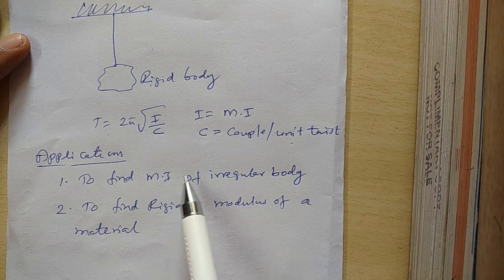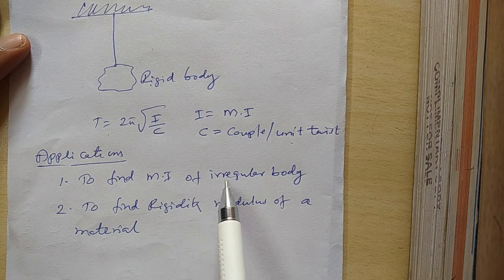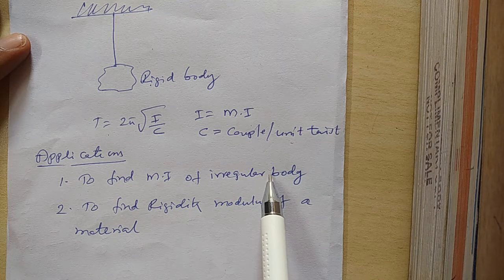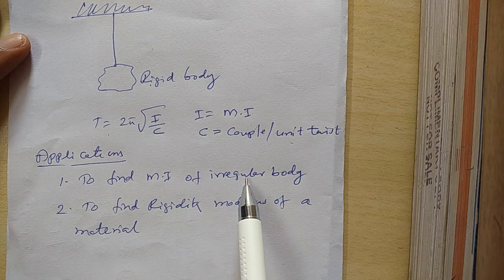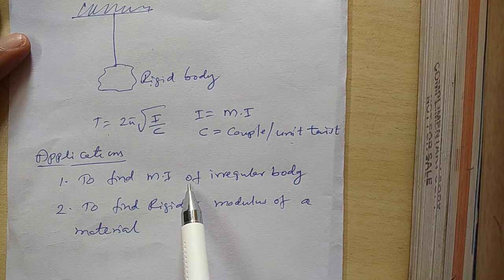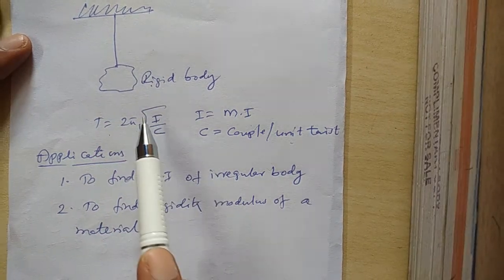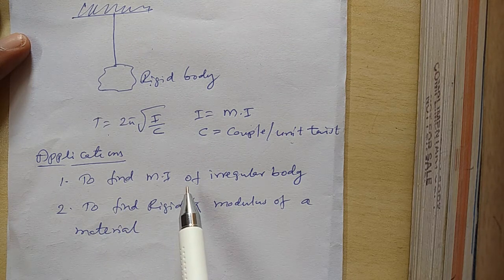The applications of the torsional pendulum experiment are: first, we can find the moment of inertia of an irregular body. By using regular bodies to find I/T², we can then determine the moment of inertia of any irregular body. Second, we can find the rigidity modulus of a given wire used to suspend the body. This is a very important topic.